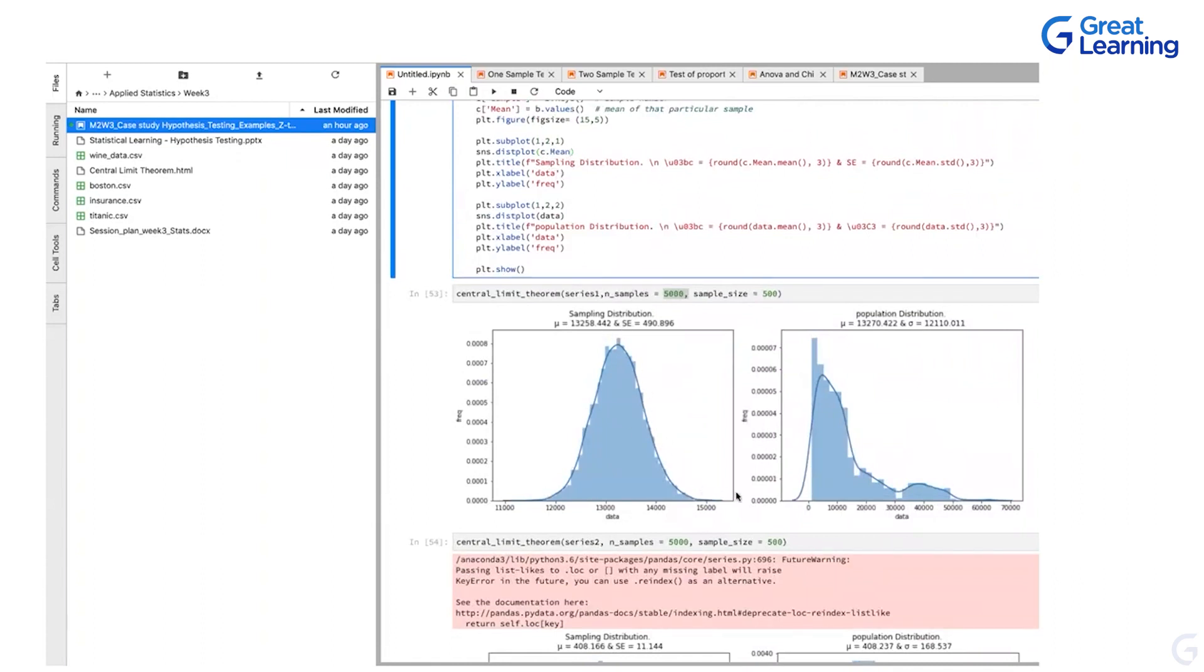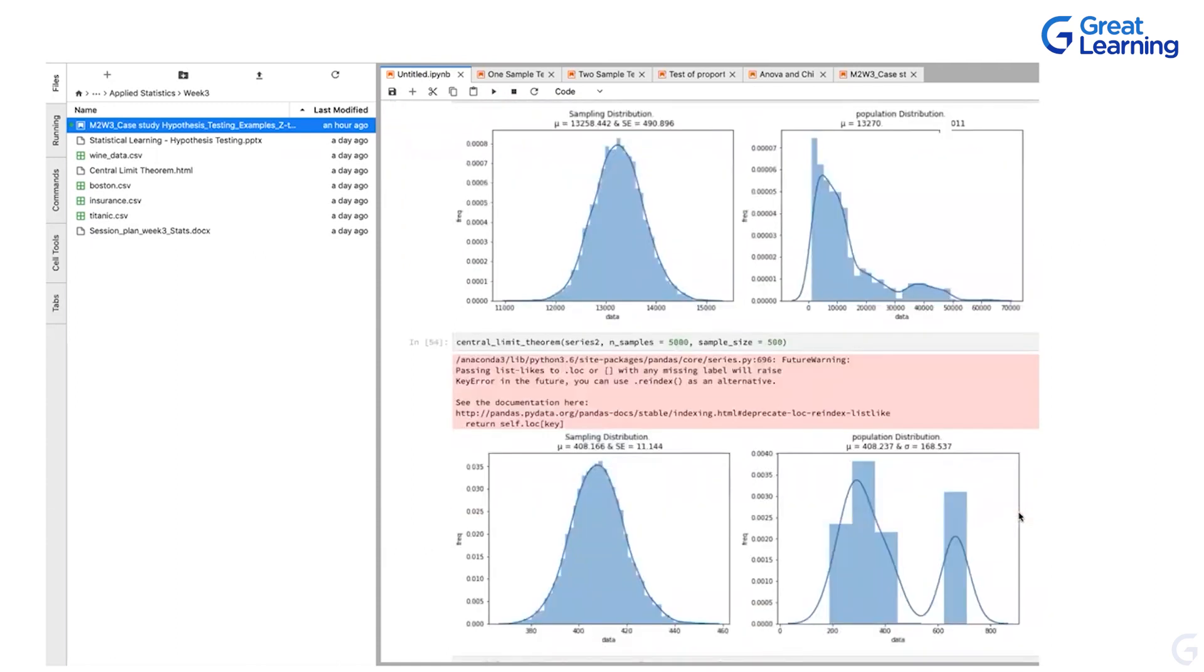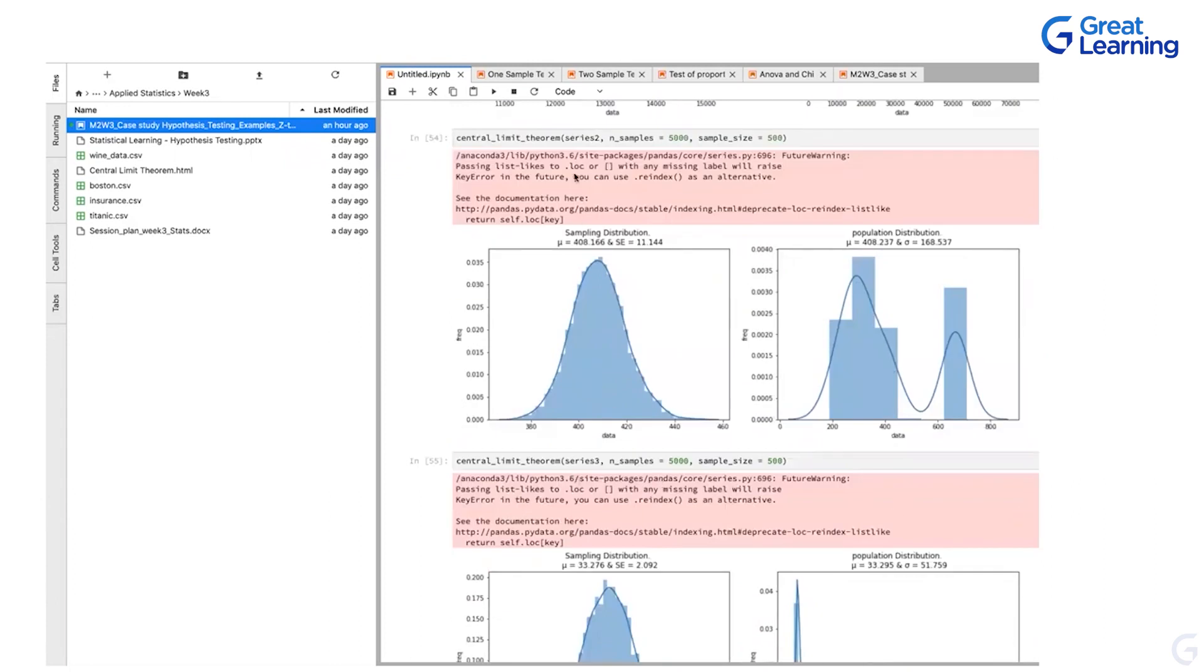So the mean is normally distributed. This is how a normal distribution looks like. Whereas your population distribution is actually not normal. So is it which side skew, left skew, right skew? Right skewed. Exactly. And now if you look at another example, so we took three examples, right? Three data sets.